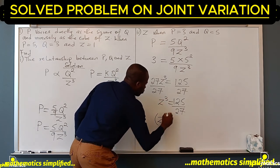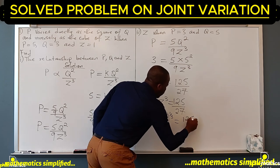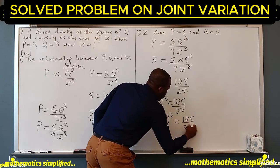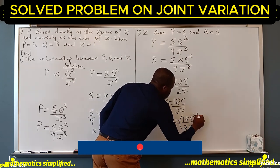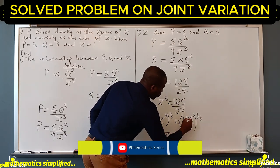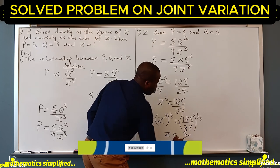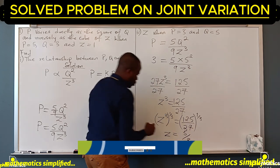So that z cubed will be 125 over 27. We'll take the cube root of both sides. z cubed, cube root, which is the same as raised to power 1 over 3.